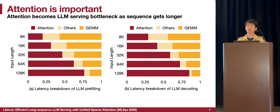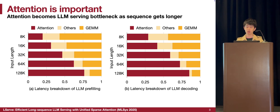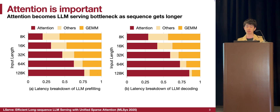In this figure, we demonstrate that the bottleneck in long context processing is the attention computation. As the sequence length gets longer, the attention operation can be the bottleneck of the end-to-end decoding system in both the prefilling stage and the decoding stage. This phenomenon can be further exacerbated with longer input sequences, because the compute complexity of the attention is always higher than the linear layers.